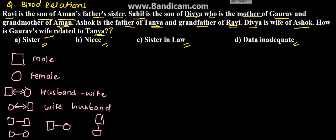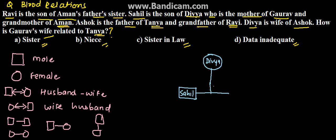The first condition given is: Sahil is the son of Divya. So here is Divya, and Sahil is her son. Sahil is the son of Divya, who is also the mother of Gaurav. So we have Gaurav too in the same line. We are considering this because there can be more than one son or daughter.